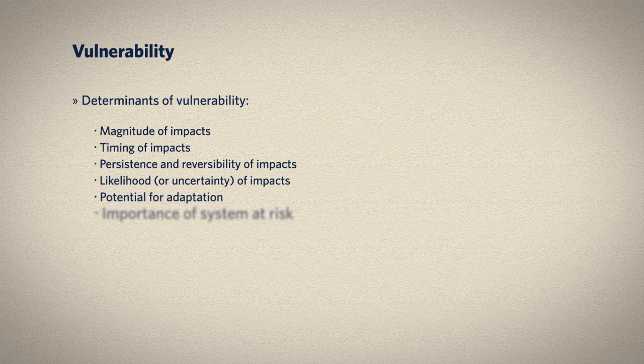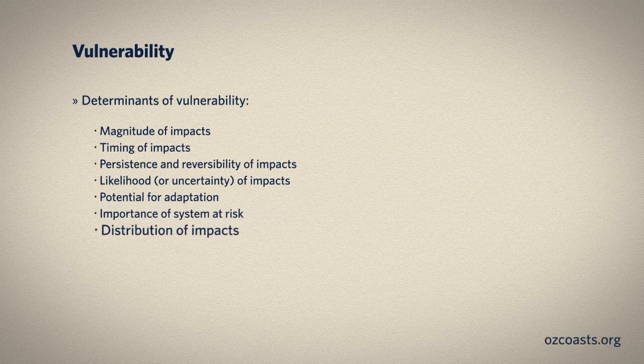The criteria shown here help us to identify key vulnerabilities to climate change impacts. When we apply these criteria to human and natural systems around the world, we see that coastal systems, food, fresh water supply, and infrastructure are particularly vulnerable. Generally speaking, developing countries are considered more vulnerable than developed countries, both because of the magnitude of impacts expected in those regions and the lowered potential for adaptation. Coastal systems are also particularly vulnerable because of the high likelihood and high magnitude of impacts.